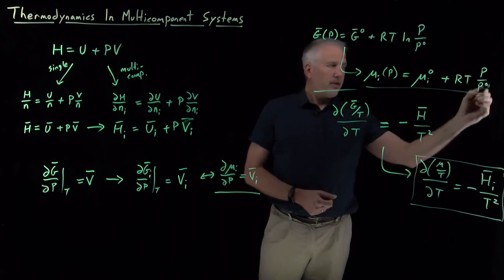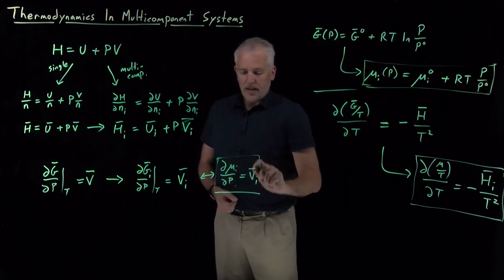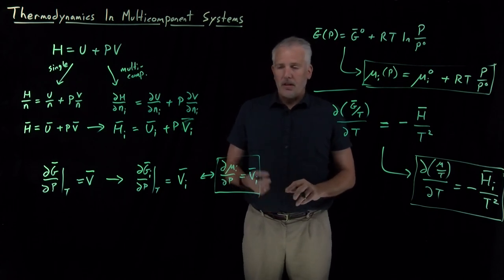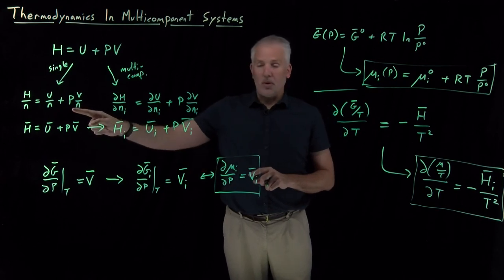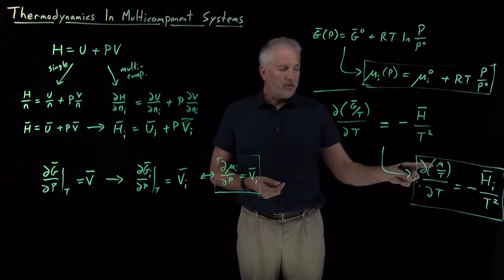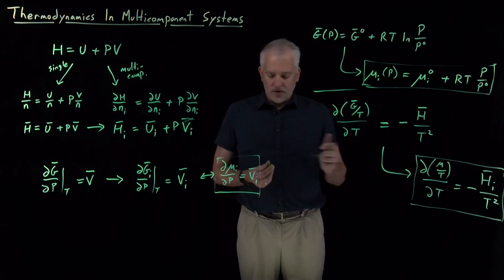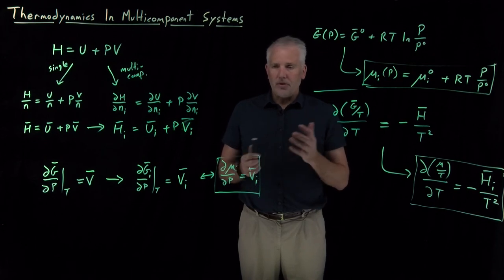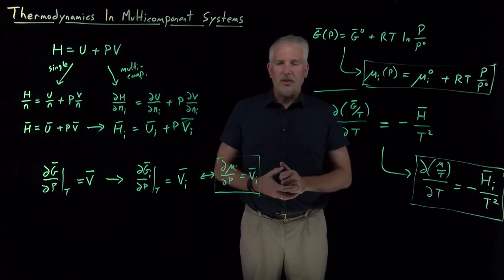Likewise, we have these versions of equations that we've seen before, which have a slightly different appearance in a multicomponent system: number one, because we need to think about partial molar quantities instead of just molar quantities; and number two, because we call the partial molar Gibbs free energy the chemical potential. Switching from a single component thermodynamic result to a multicomponent thermodynamic result is usually just as straightforward as making those two changes.